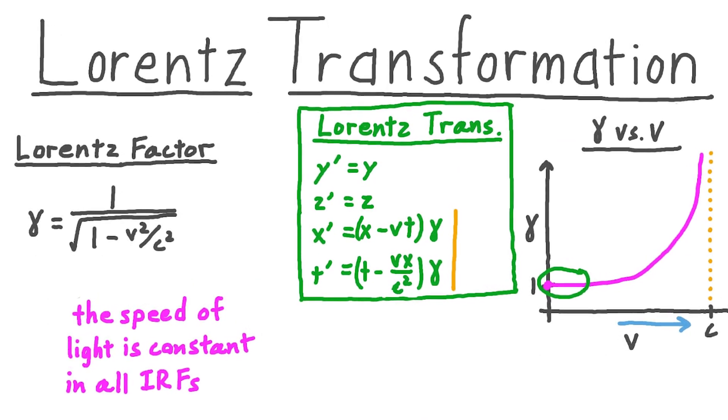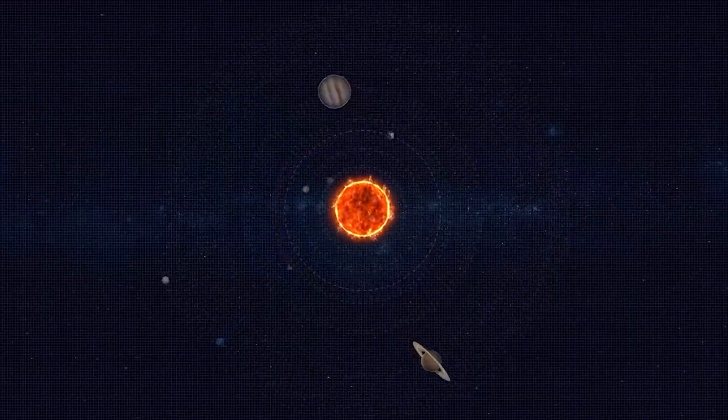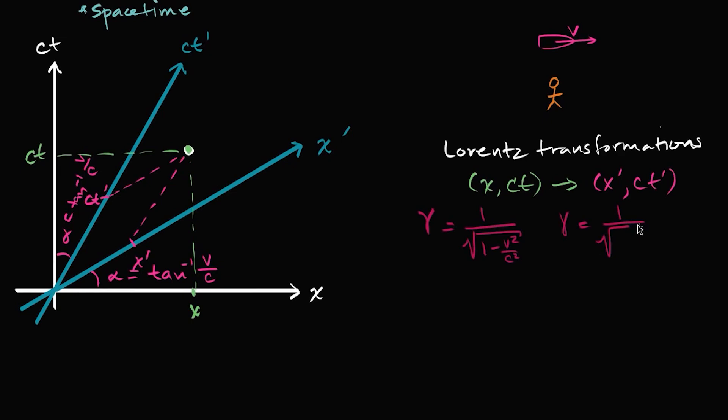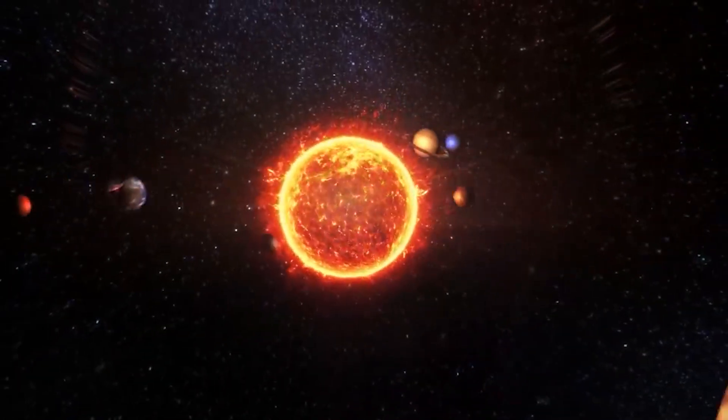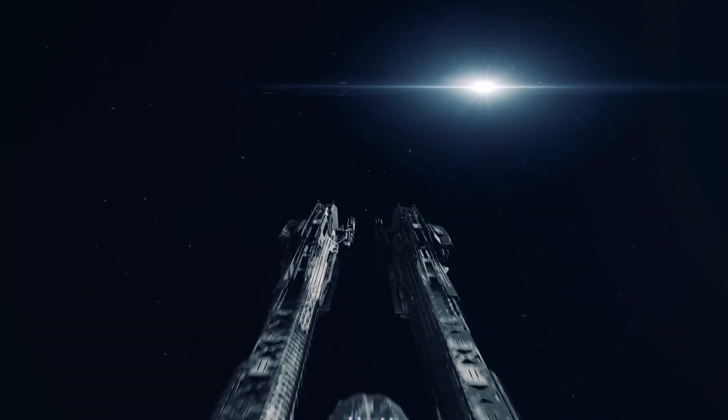The Lorentz factor is low for everyday objects, nearly precisely one, but it rapidly increases for high-speed things. An object's Lorentz factor is precisely one when it is at rest. Other than what you have to put into it, you don't need more energy to move something.